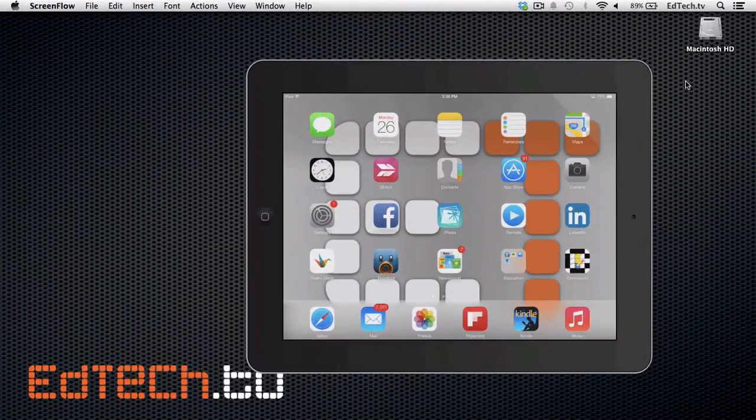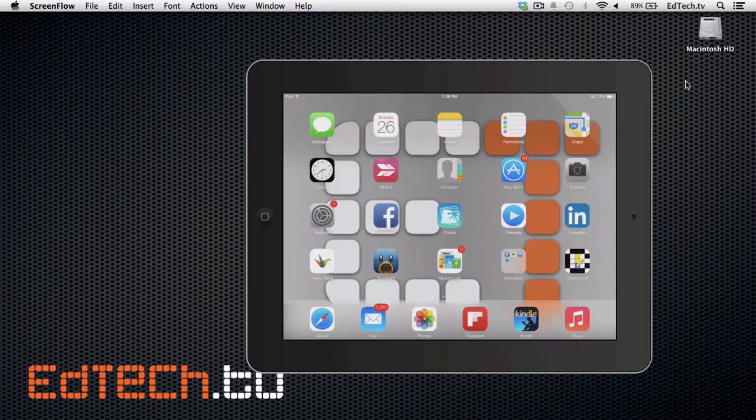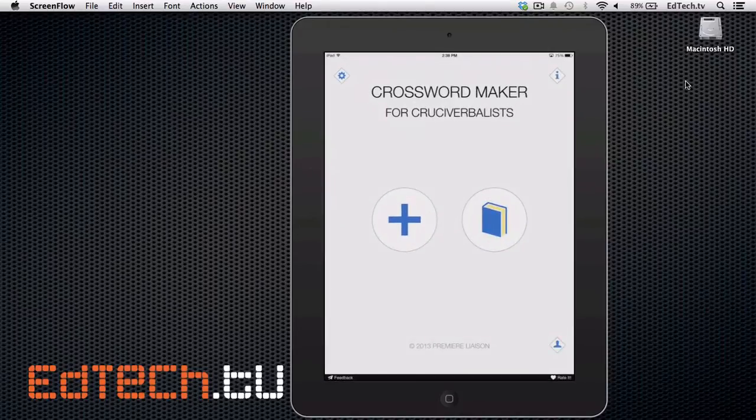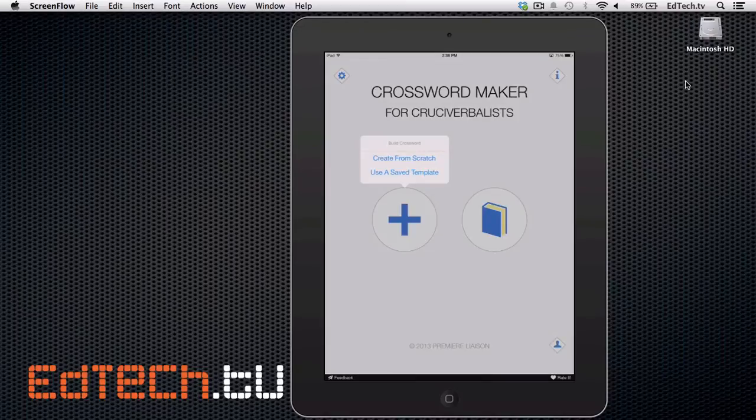Normally I like to work in landscape mode to help you guys see the best, but since this app is designed for portrait mode, we're going to work in portrait mode. So let's open up the app, and the first thing you're going to see are two choices, either a plus button or a book. The plus button is for new crosswords, and the book is for ones that you have saved in the past. So let's open up the new one, and it'll give you a choice to create from scratch or to use a saved template. We're going to create from scratch.